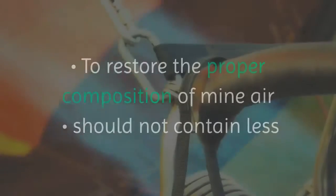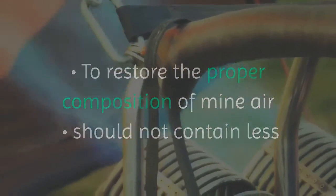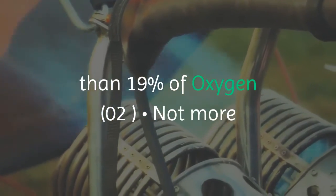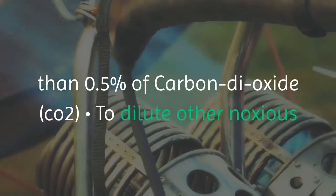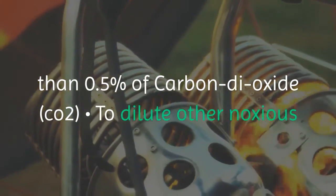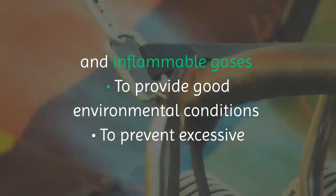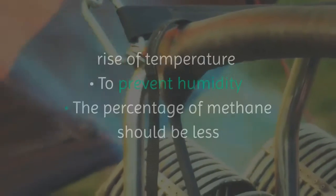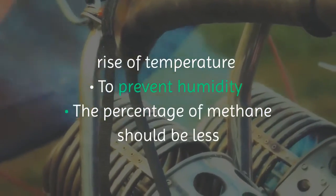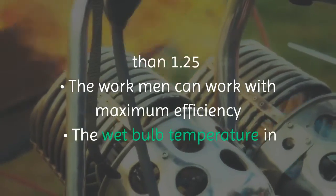Purpose of ventilation: to restore the proper composition of mine air. It should not contain less than 19% of oxygen (O2), and not more than 0.5% of carbon dioxide (CO2). To dilute other noxious and inflammable gases, to provide good environmental conditions, to prevent excessive rise of temperature, and to prevent humidity. The percentage of methane should be less than 1.25%. The workmen can work with maximum efficiency.